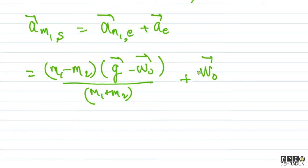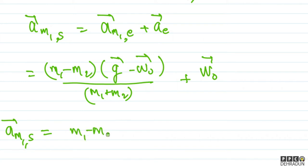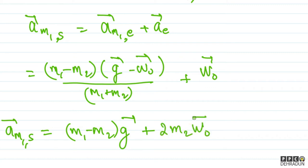The answer becomes: acceleration of M1 w.r.t. shaft = [(m1 − m2)·(g_vector − w0_vector)/(m1 + m2)] + w0_vector, which finally gives: (m1 − m2)·g_vector + 2·m2·w0_vector, all divided by (m1 + m2). This is our final answer for the first part.